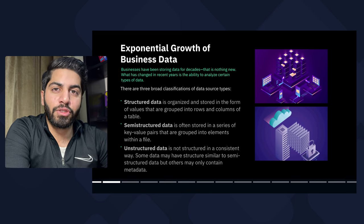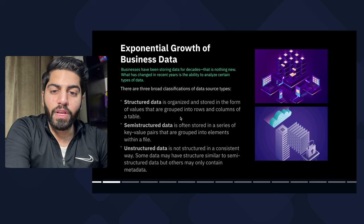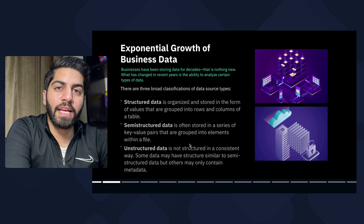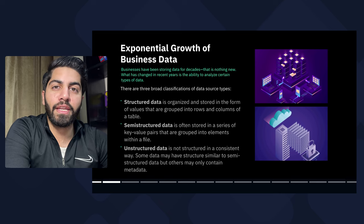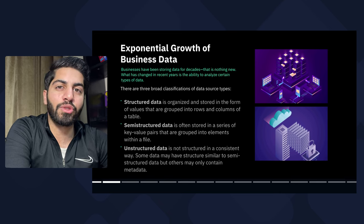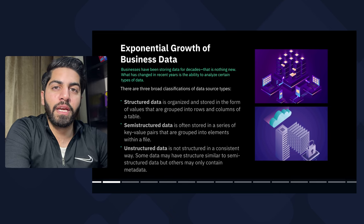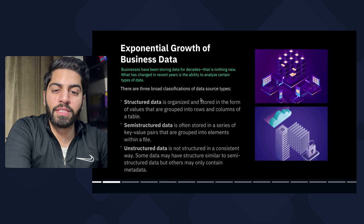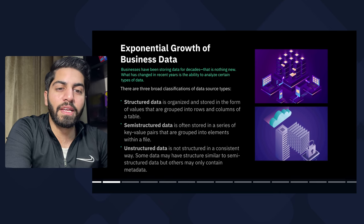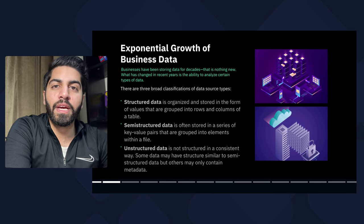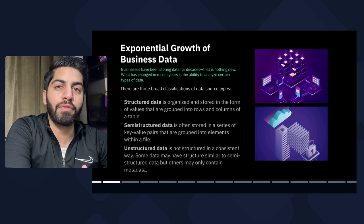For example, we store data in MySQL, Postgres, and all the structured databases — that will be structured data. Then we have semi-structured data: data that is often stored in the form of key-value pairs. Examples include data stored in NoSQL databases like MongoDB, DynamoDB, and Firebase. The third type is unstructured data — data not structured in a consistent way — for example, all the data stored in media servers that contain images, videos, and audio files.